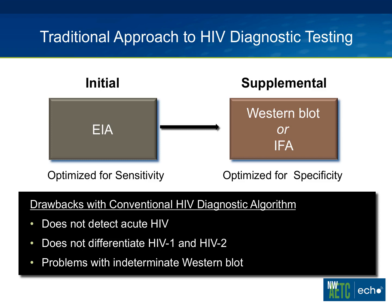There are some problems with the conventional diagnostic algorithm. Number one, the traditional EIA and Western blots are not great tests to detect people who are acutely infected with HIV. Secondly, they do not differentiate HIV-1 and HIV-2. And third, there are definite problems that clinicians have encountered over the years with indeterminate Western blots that have led to a lot of additional testing and long-term follow-up with confusing situations.